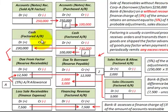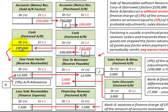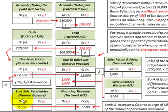Looking at the debits and credits for Corporation A: we had a credit of $250,000 for accounts receivable. The balancing debits are $230,000 to cash, $12,500 to the due from factor reserve account, and $7,500 for the loss on sales of receivables. Total debits equal the credit amount of $250,000.